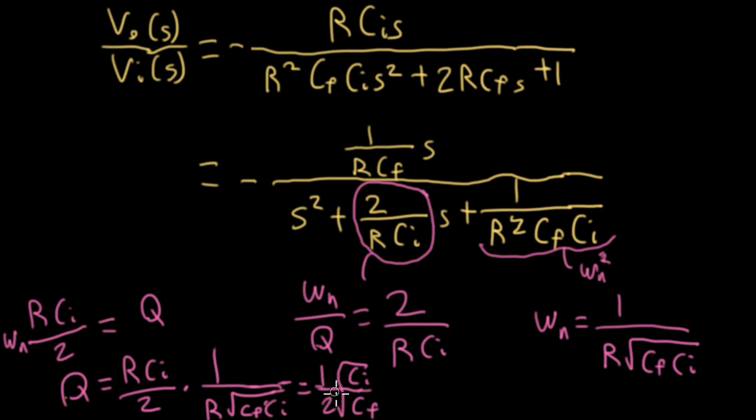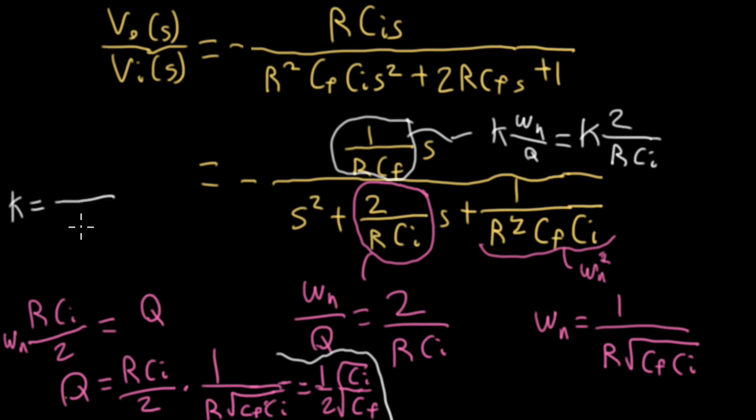Looking at the numerator, that's looking like k times omega n over q. So that's going to equal k times 2 over rci. So equating these things, I could say k is equal to something where I have rcf in the denominator, and I would have a 2 in the denominator, and then I would have rci in the numerator, and the rs cancel. So I could write this as just ci over 2cf. I should have mentioned what k was. k is the gain of the filter at the peak frequency.